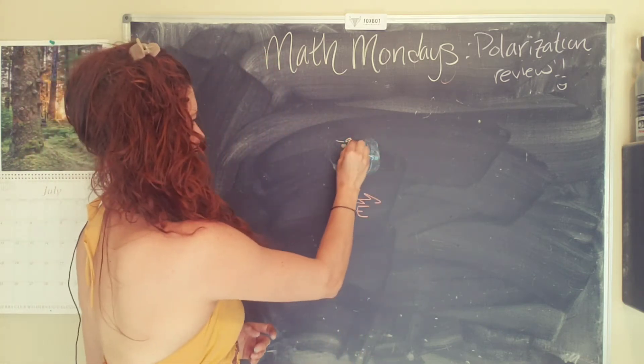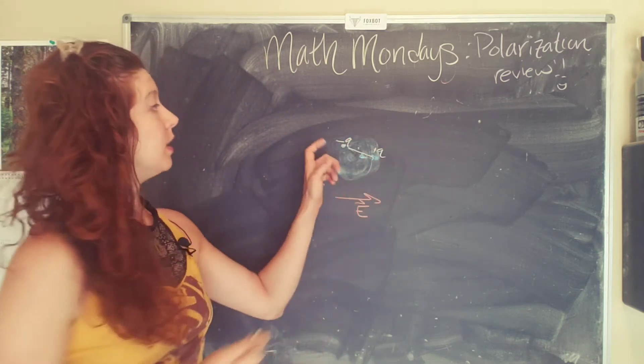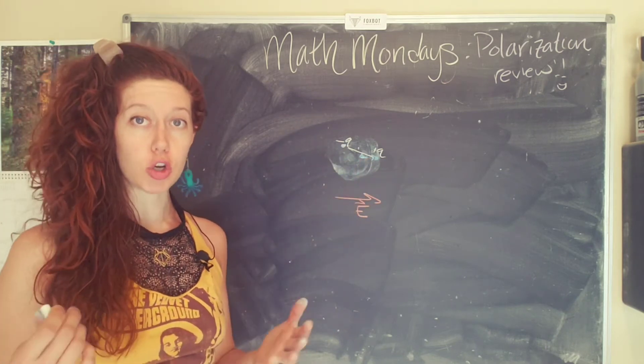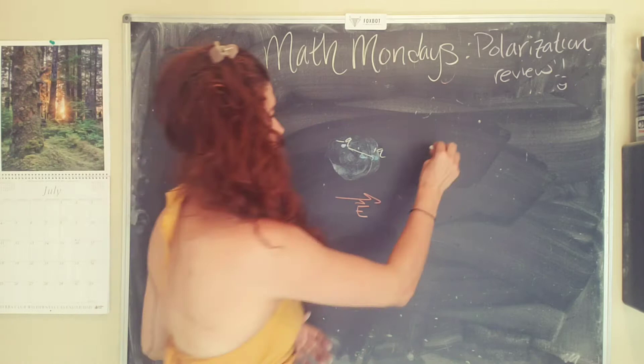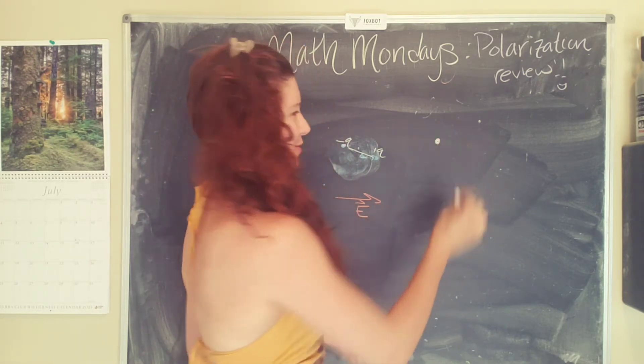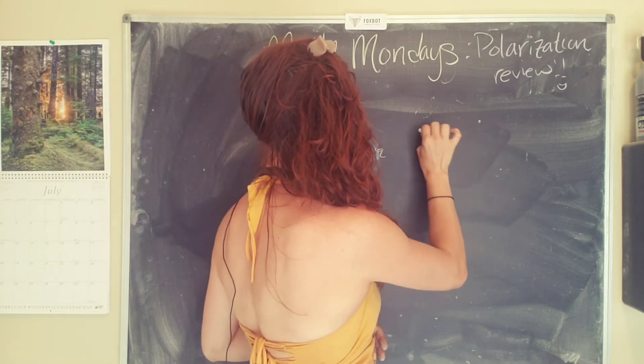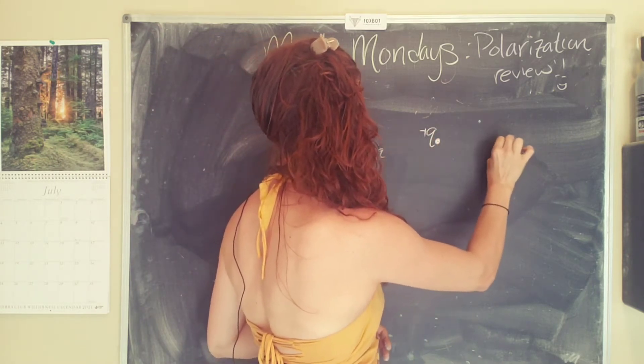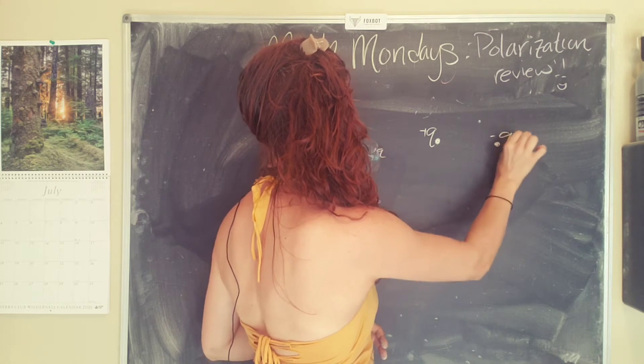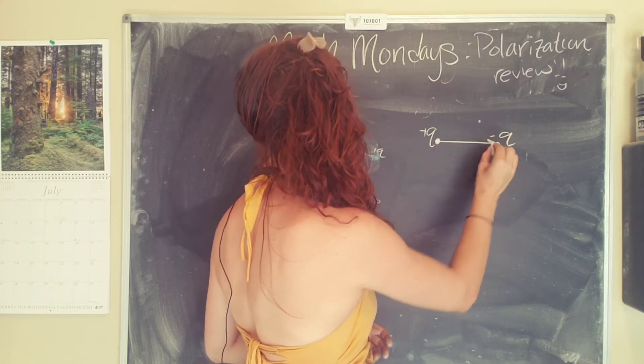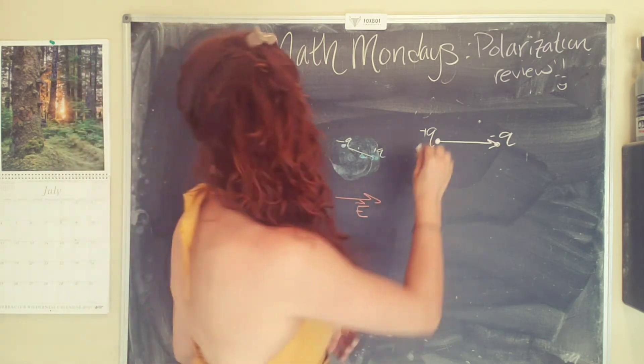So minus q and plus q. So this is a dipole moment when you have charges that are separated. And to make it easier to visualize, we're gonna zoom in and flatten it out. So let's say we have a positive q here, positive charge here, and a negative charge with magnitude q here. And there is a force between the two and they are separated by a distance d.